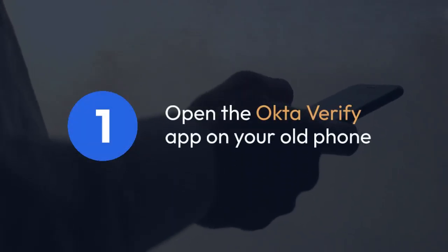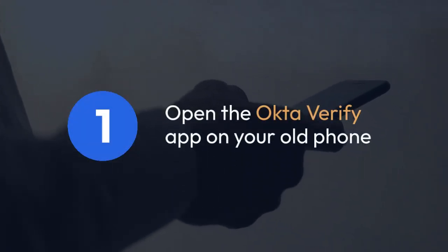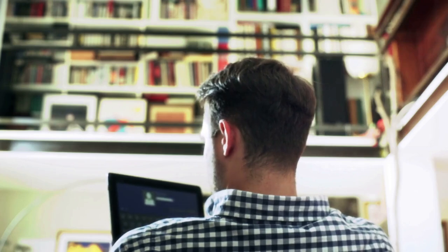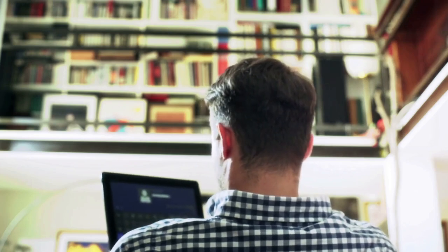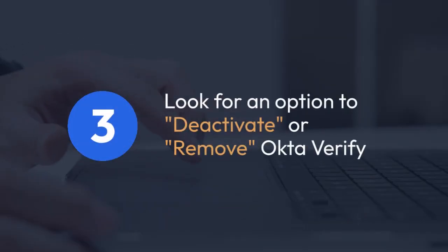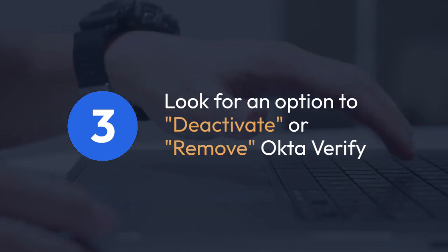1. Start by opening the Okta Verify app on your old phone. 2. You'll likely find a settings menu, usually represented by a gear icon or three dots — tap on it. 3. Within the settings, look for an option to deactivate or remove Okta Verify. This might be phrased slightly differently depending on your app version, but the meaning is the same.